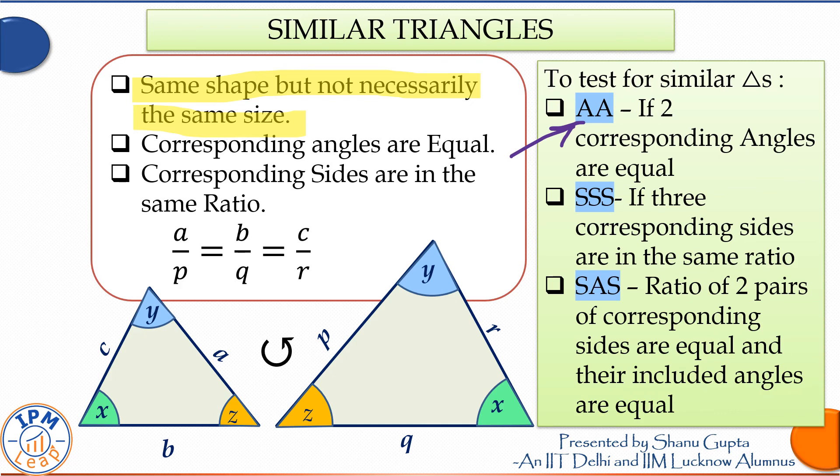Since the angles in a triangle sum up to 180 degrees, if any two angles are equal, that means the third angle is also equal. And then we can use the fact that the corresponding sides will be in the same ratio.